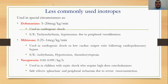Less commonly used inotropes used in special circumstances: Dobutamine — used in cardiogenic shock; causes tachyarrhythmia and hypotension due to peripheral vasodilation. Milrinone — used in cardiogenic shock after cardiac surgery; causes arrhythmia, hypotension, and thrombocytopenia. Vasopressin — can be used in septic shock requiring high doses of catecholamines; causes bradycardia and peripheral ischemia due to severe vasoconstriction.